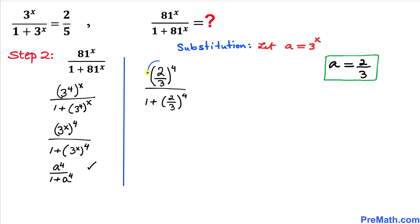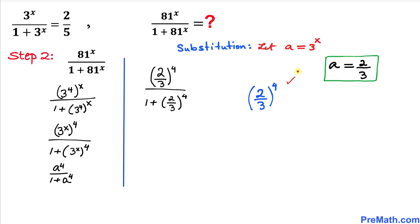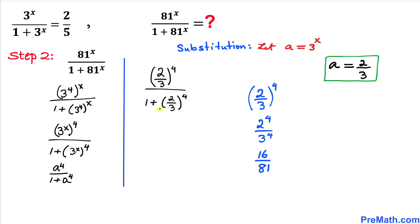Let's simplify (2/3)^4, which equals 16/81. So the expression becomes 16/81 divided by (1 + 16/81). The denominator simplifies to 97/81.